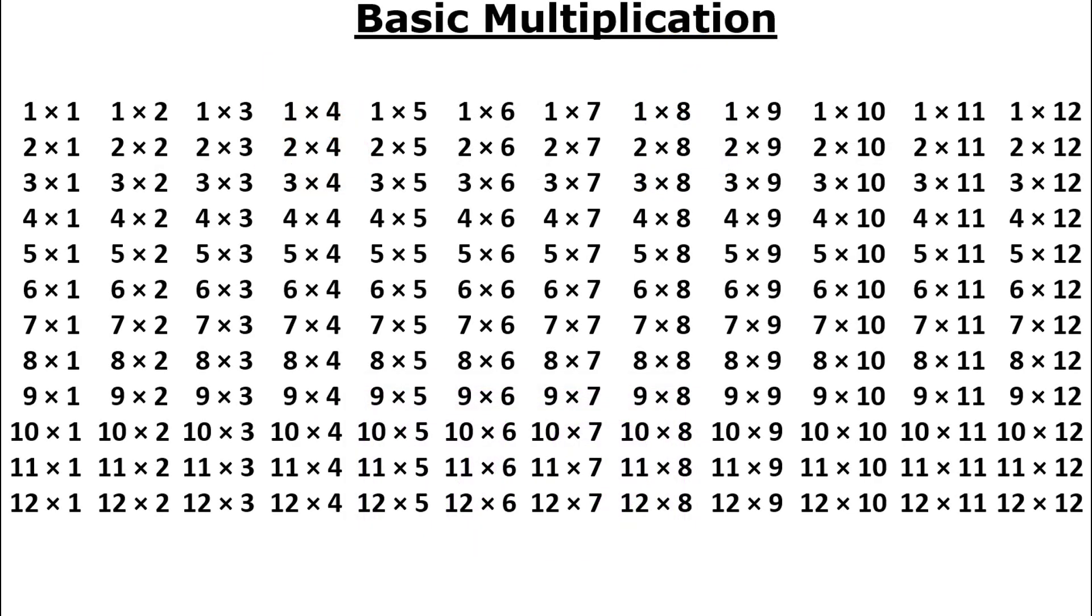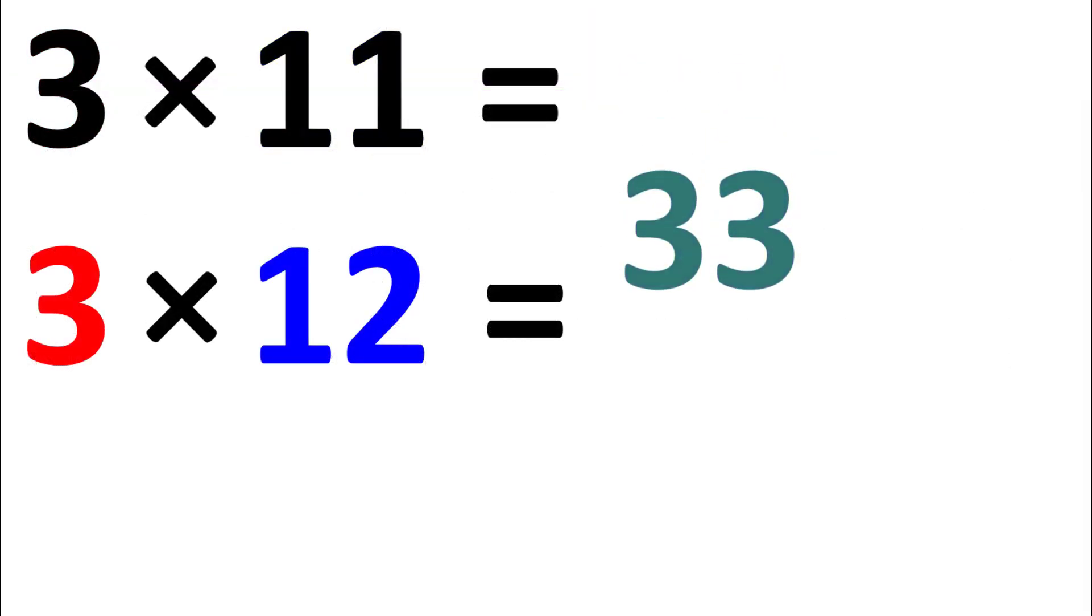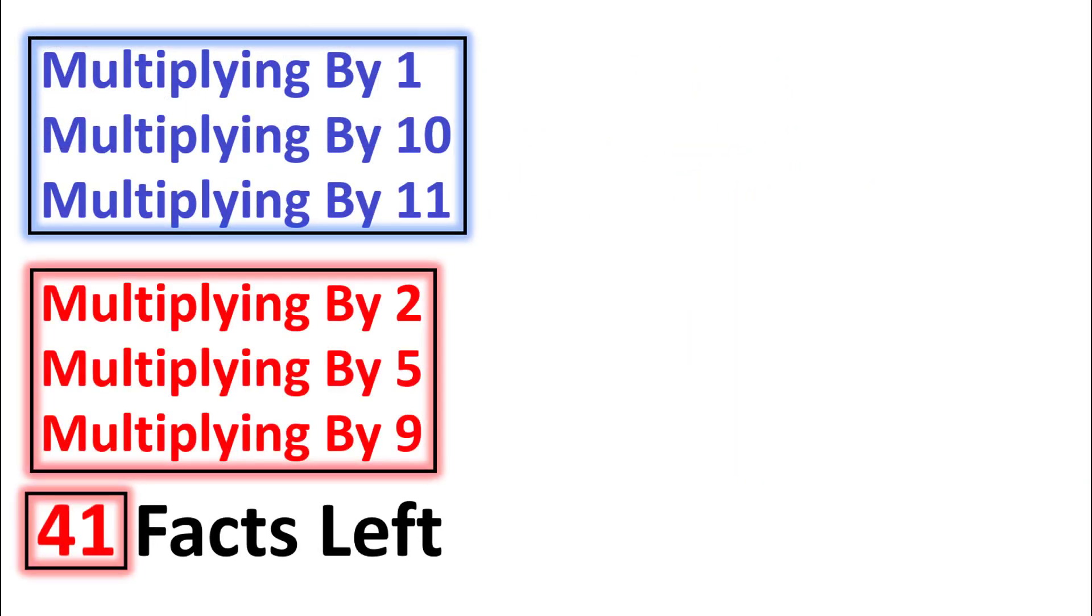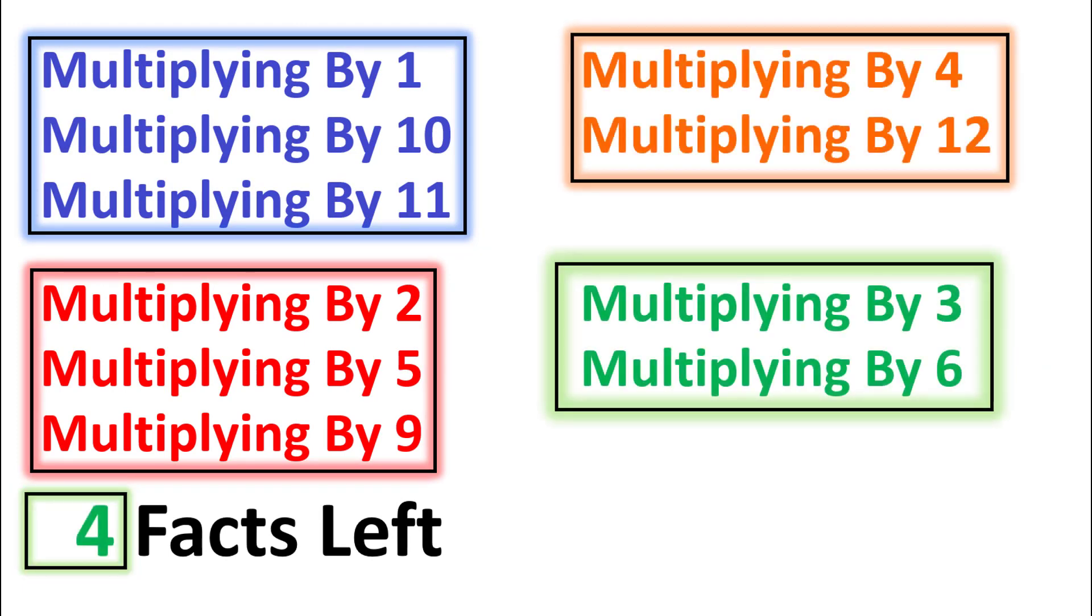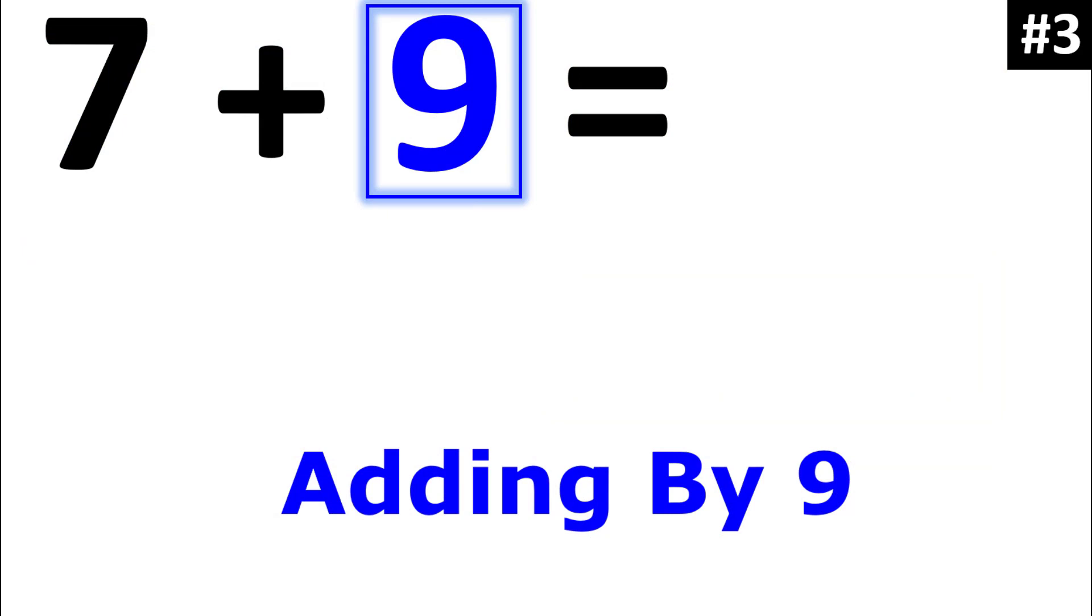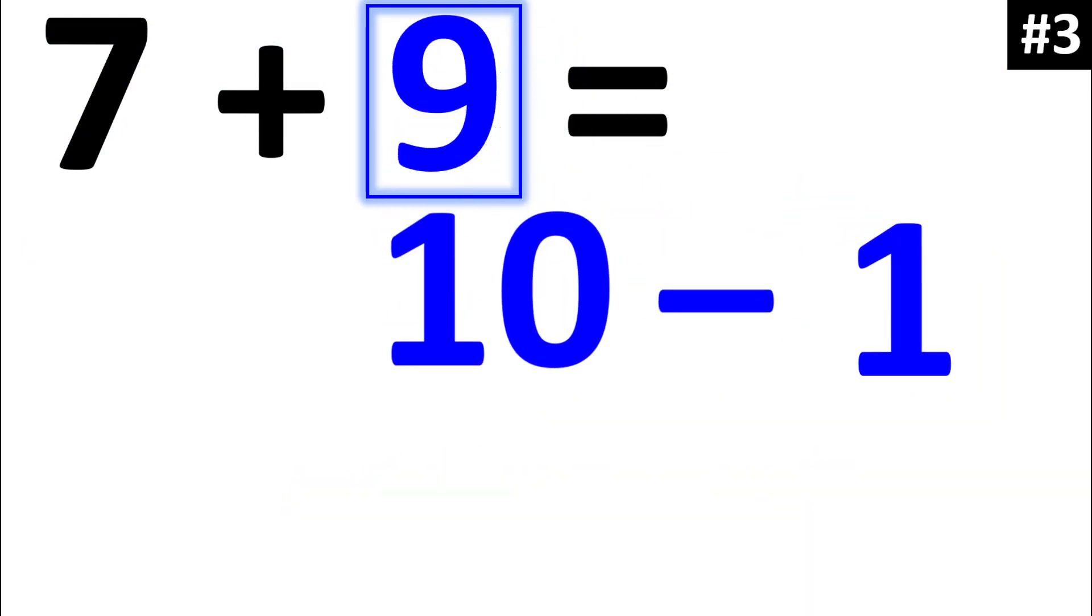Instead of having to memorize 144 multiplication facts, after quickly learning eight key rules, there are only ten facts remaining. And after learning ten key rules, there are only four facts remaining. Students no longer have to struggle adding by numbers such as eight or nine.